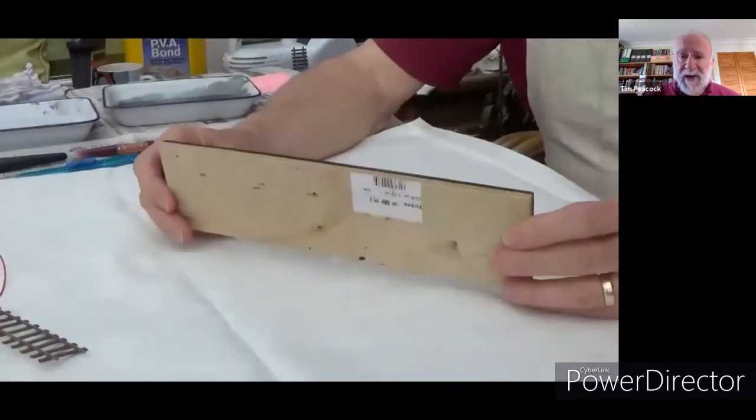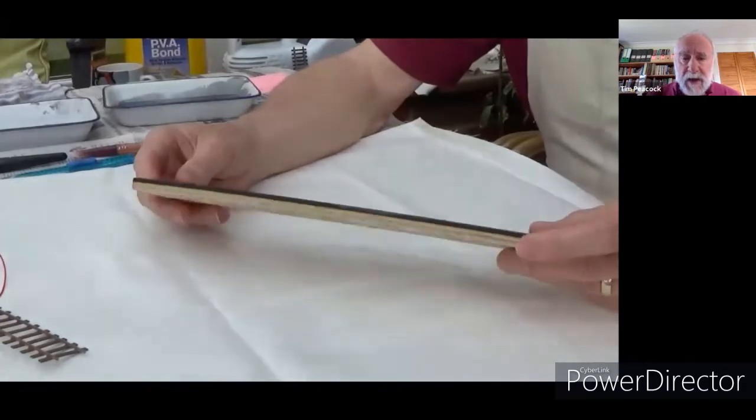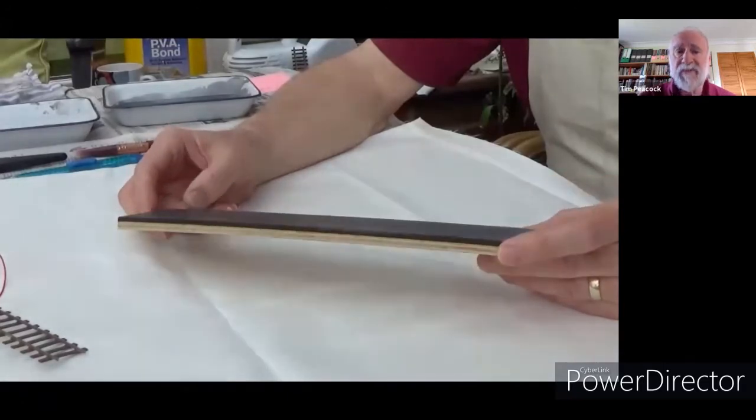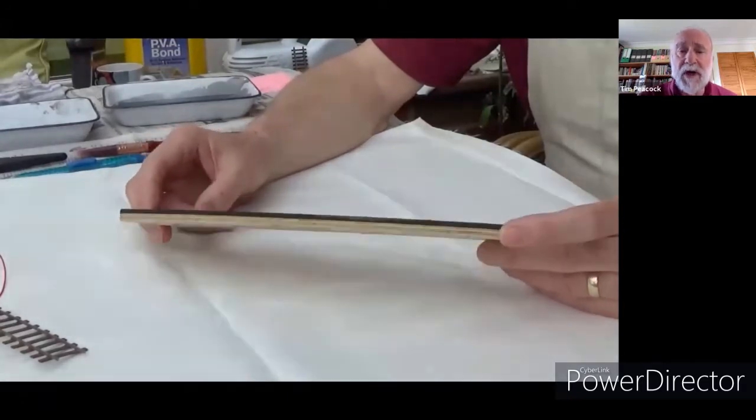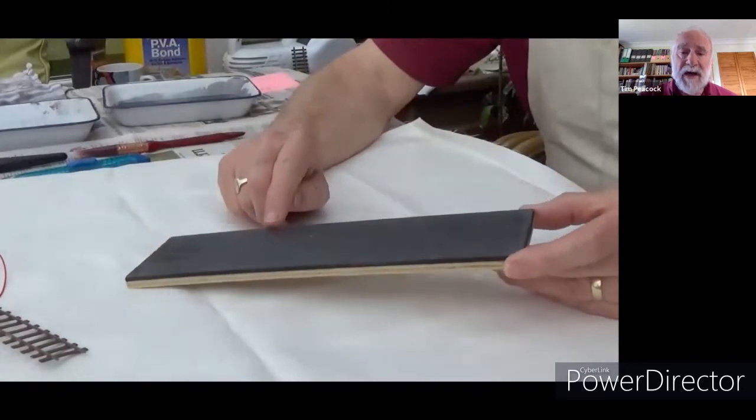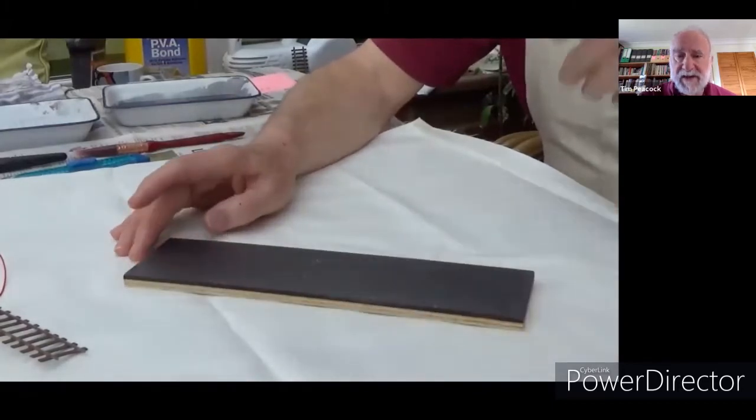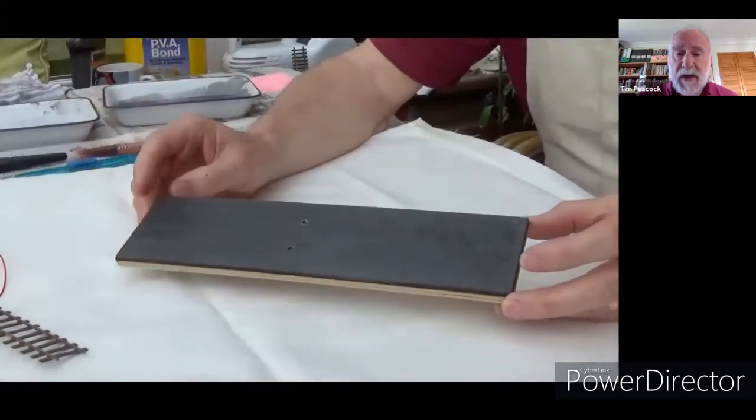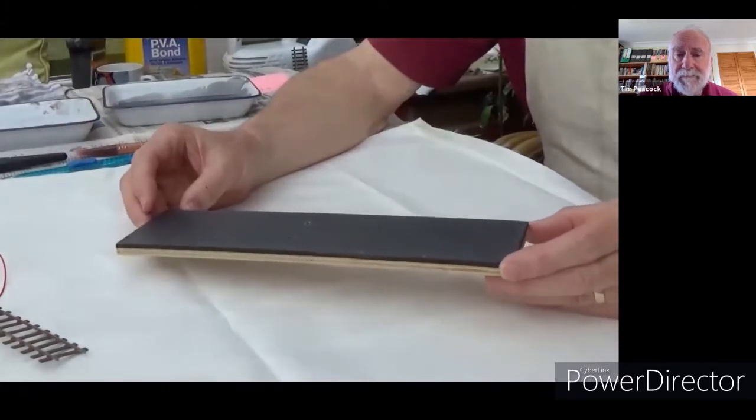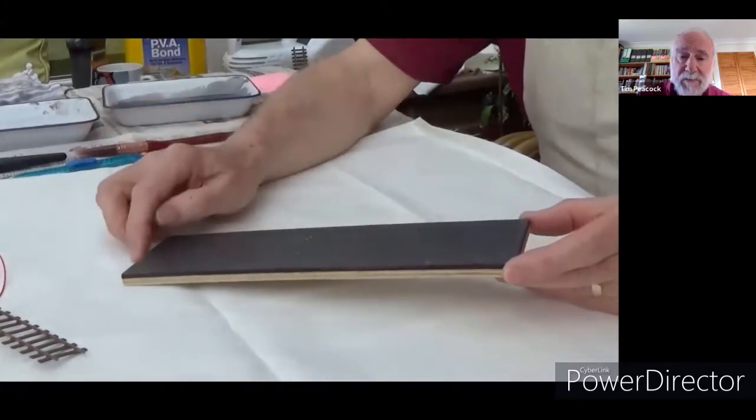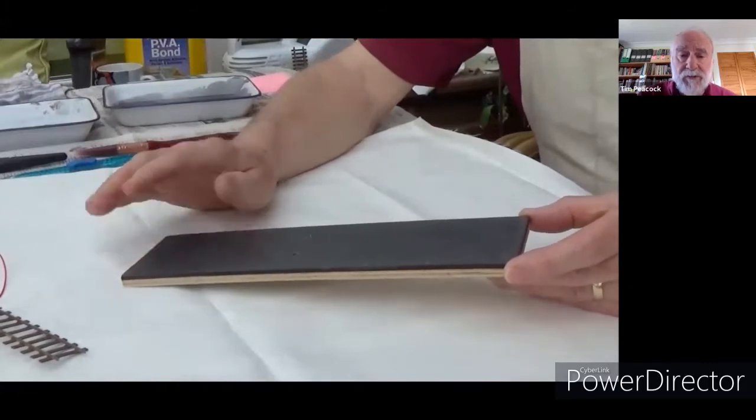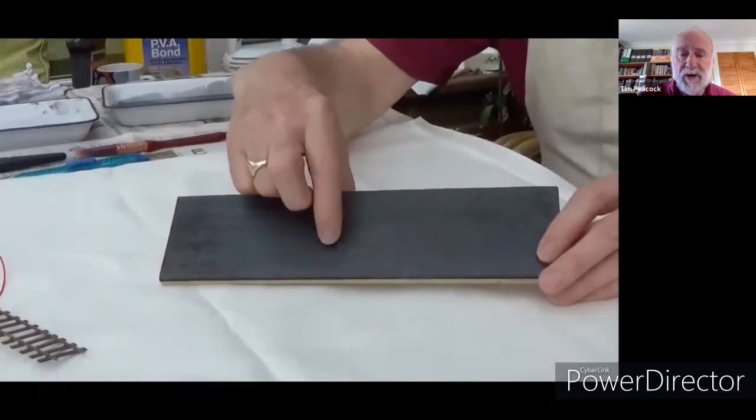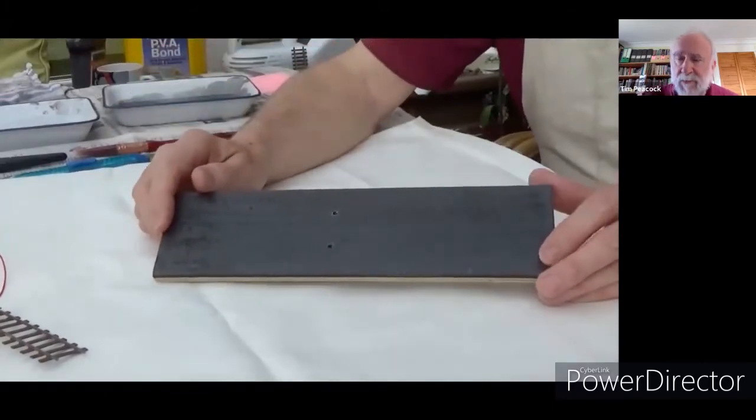So now we have a representation of the baseboard. For a trackbed, I favor three millimeter closed cell foam. Some of you will like cork. And I cover the whole of the baseboard with the foam and then cut out later where the ballast shoulders are. And I'll show a method of doing that. And that's where foam has an advantage. The foam has been pre-primed with a bit of dilute PVA. And you can see a couple of holes there drilled ready to take the wires. Just to make sure that your wires are not going to get in the way of anything underneath the baseboard like a beam or a point motor.